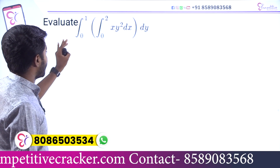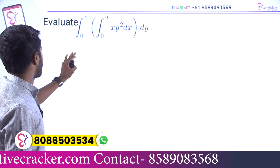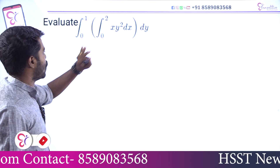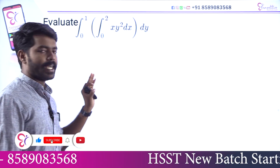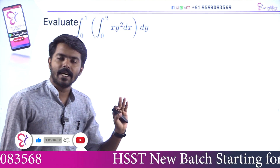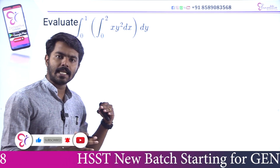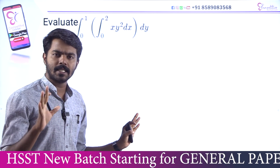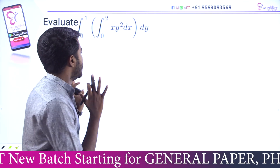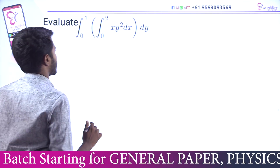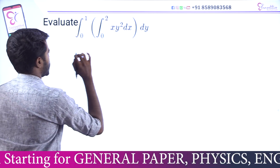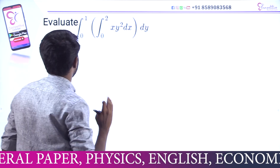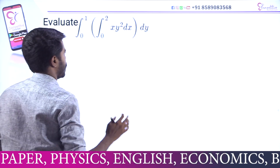Let's evaluate the integral: integral 0 to 1, integral 0 to 2, x·y² dx dy. Let's do this method — integrating with respect to dx and then with respect to dy.